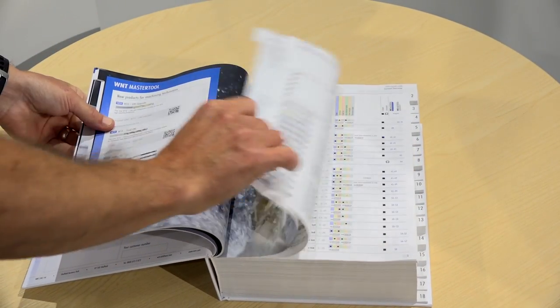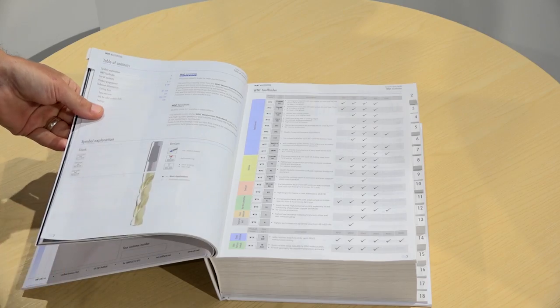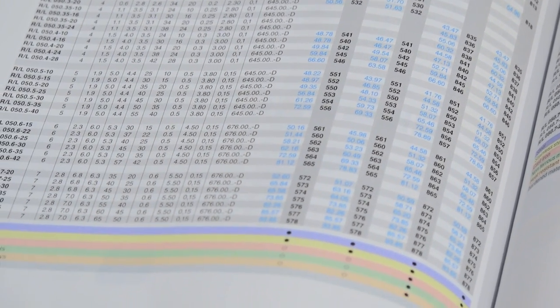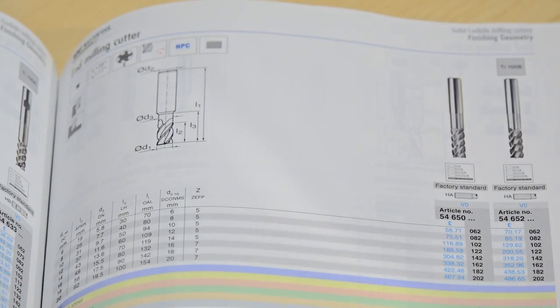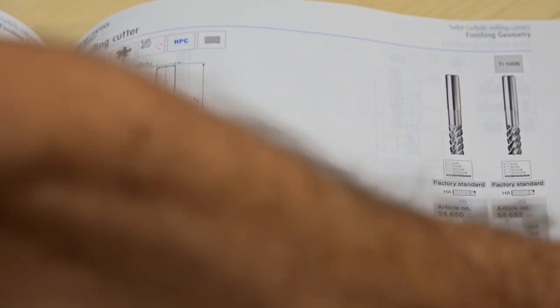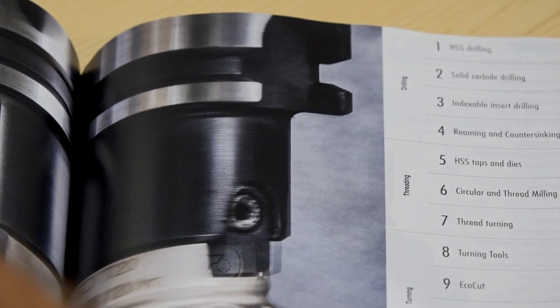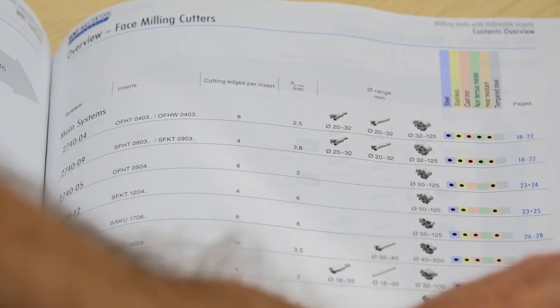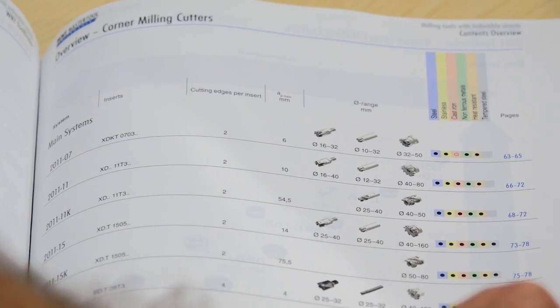But obviously if I'm a new customer looking for a catalog, how do I get hold of one? Customers, either existing or new potential customers, can contact our sales office or their local WNT technical sales engineer who will be carrying copies of the new catalog in their car.